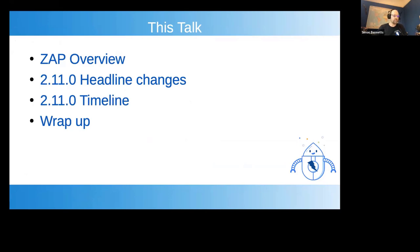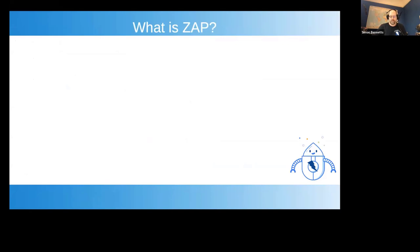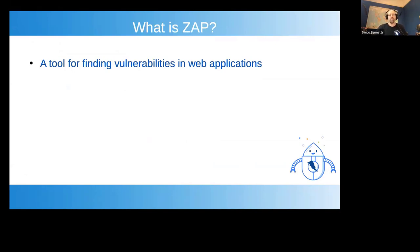ZAP is a tool for finding vulnerabilities in web applications — really looking for vulnerabilities in custom web applications. Unlike some security scanners, we're not looking for known vulnerabilities in known applications like WordPress. We're looking for new vulnerabilities that potentially no one has found before, so you can use it to test your custom applications even if they haven't been tested by professional pen testers. It is an OWASP flagship project — the most mature projects you're recommended to get started with.